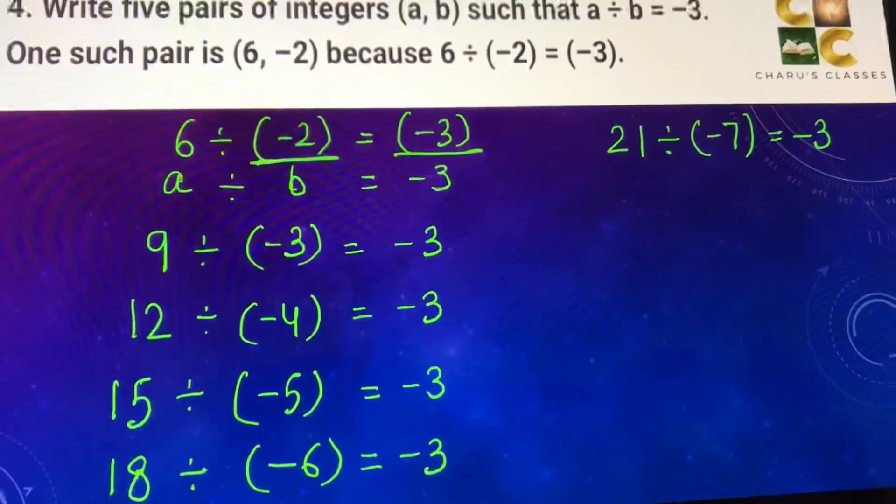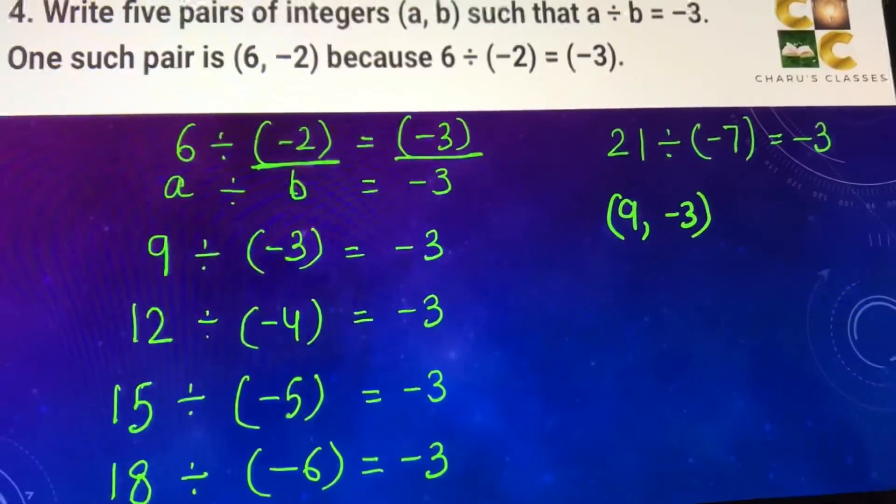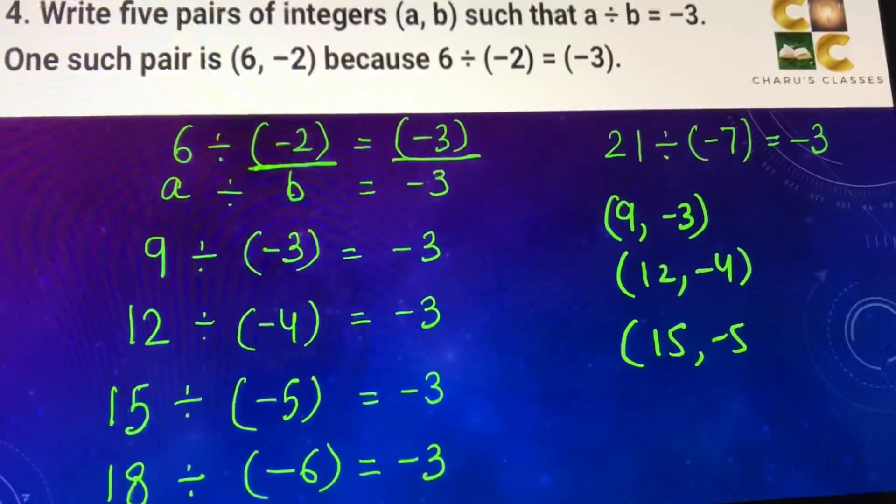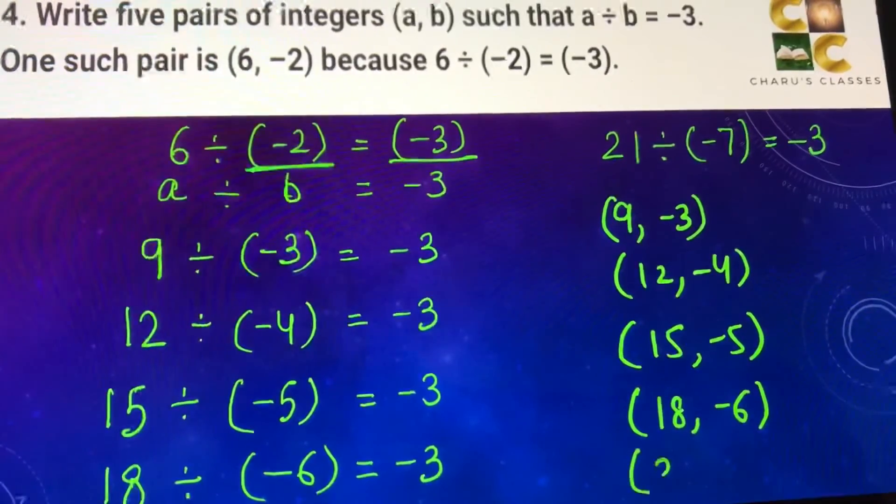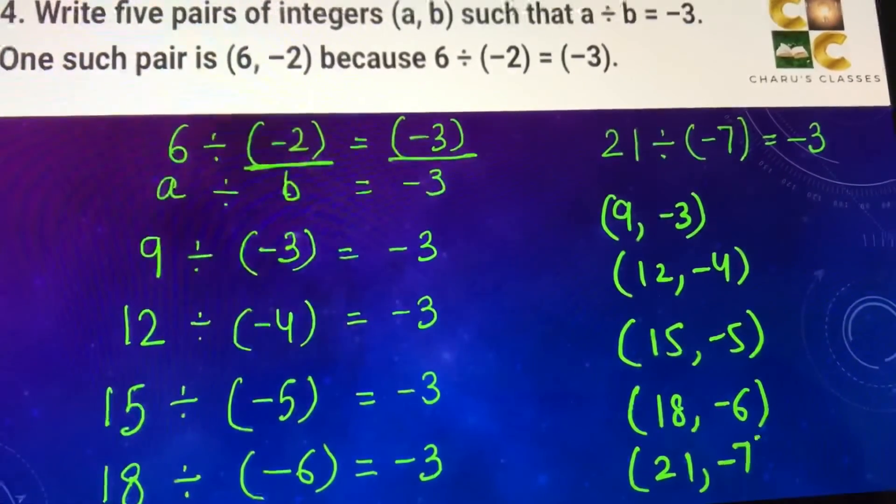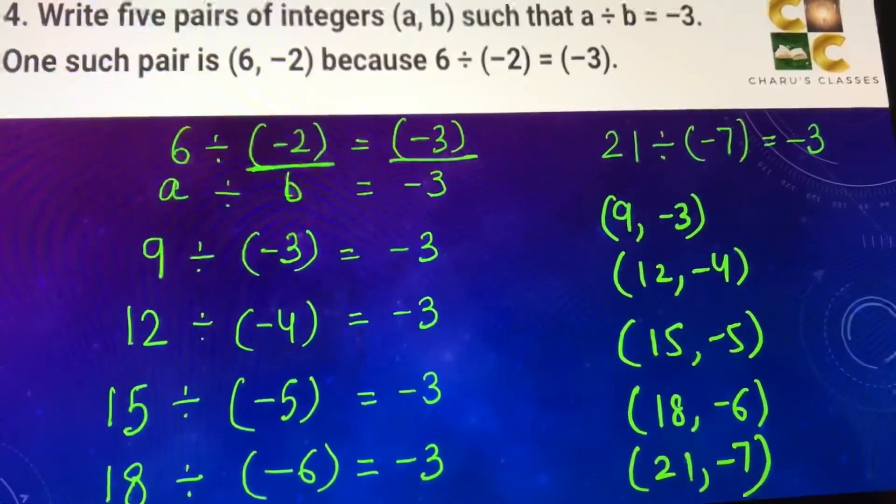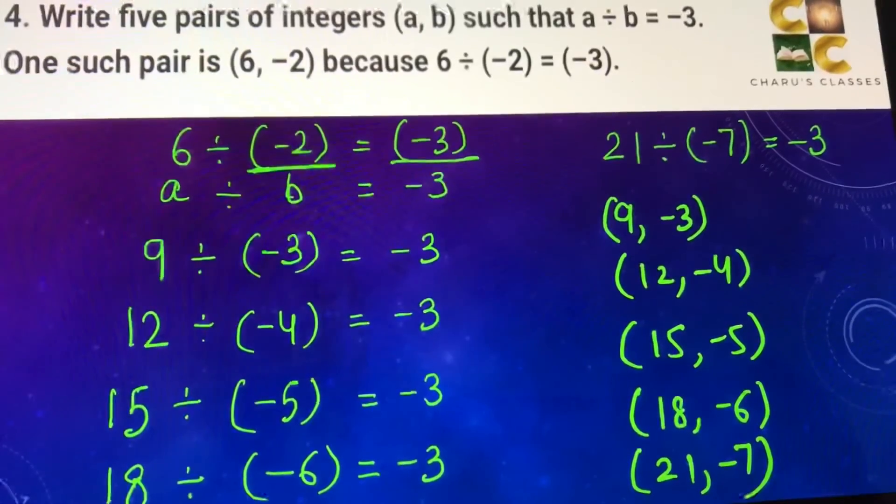So these are my 5 pairs of integers: 9 and minus 3, 12 and minus 4, 15 and minus 5, 18 and minus 6, 21 and minus 7. Whenever I am dividing this first number by the second number, in all the cases, the answer is coming as minus 3.